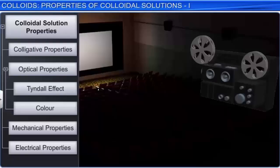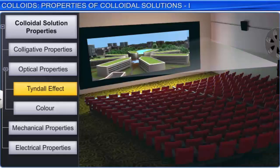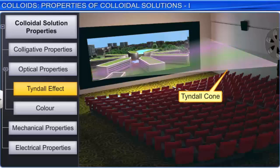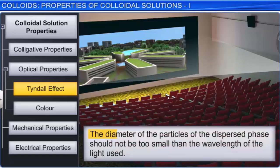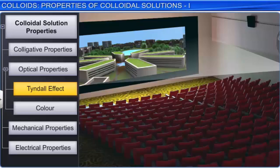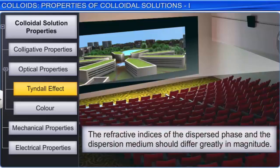Every time you go to a cinema hall, you are able to trace the path of the light beam from the projector. What you actually see is the Tyndall effect — a Tyndall cone formed due to the scattering of light by dust particles. The Tyndall effect is observed only when two conditions are satisfied: first, the diameter of the particles of the dispersed phase should not be too small compared to the wavelength of the light used, meaning the dimensions of the colloidal particles are comparable to the wavelength of the visible light used. Secondly, the refractive indices of the dispersed phase and the dispersion medium should differ greatly in magnitude.